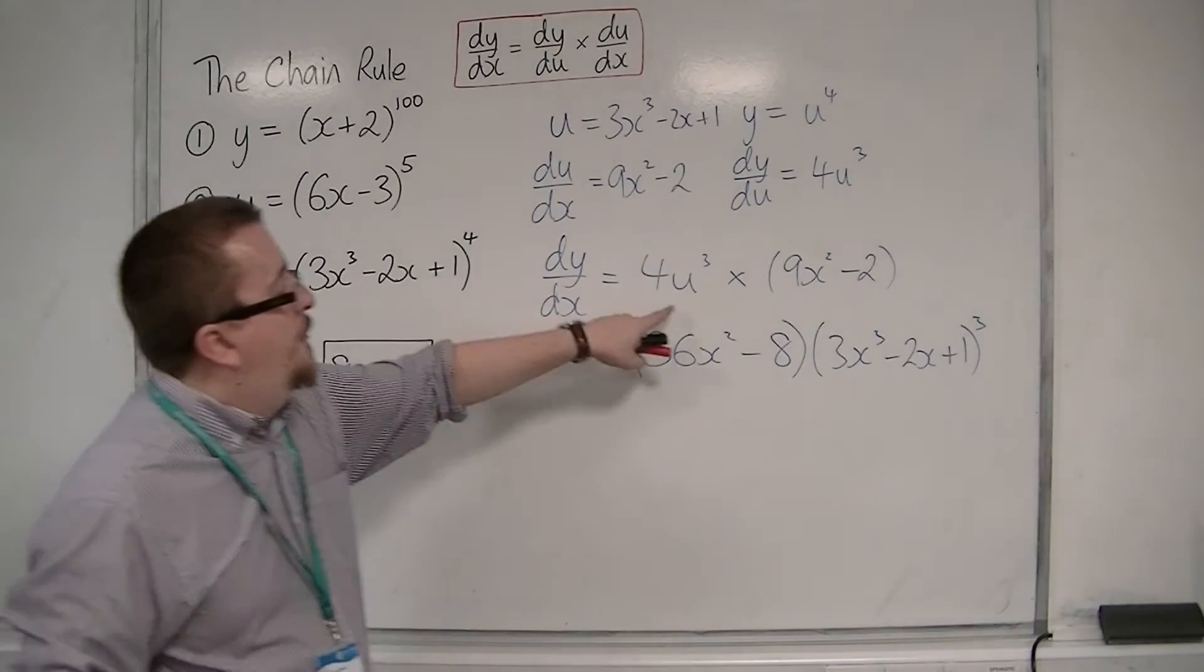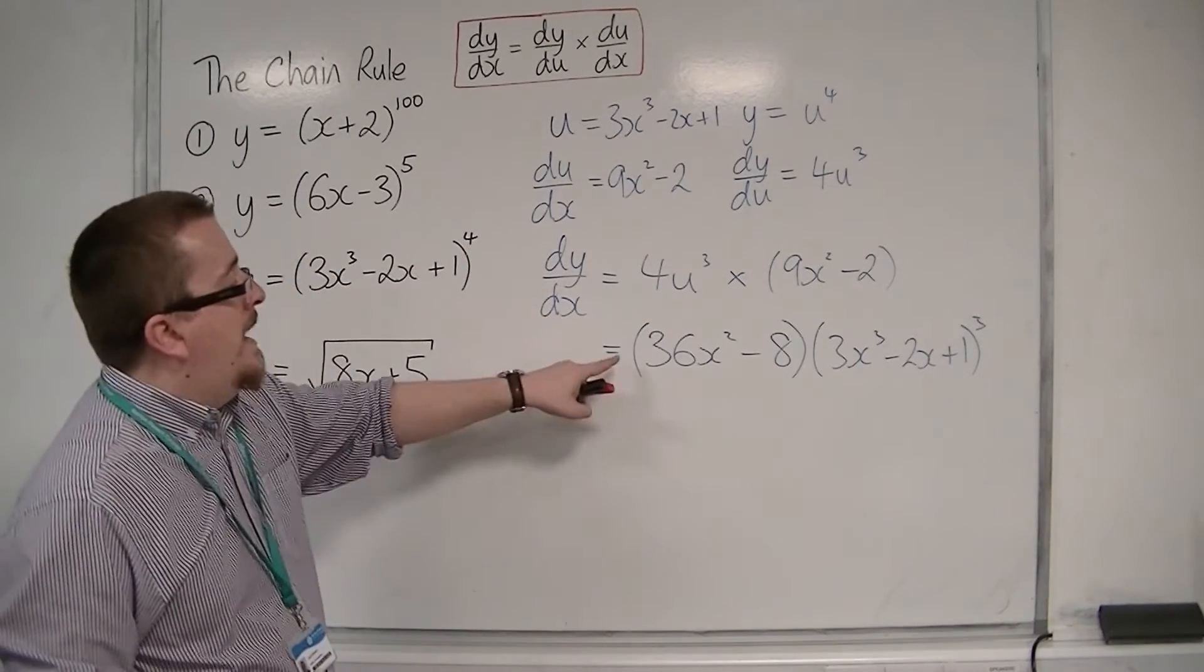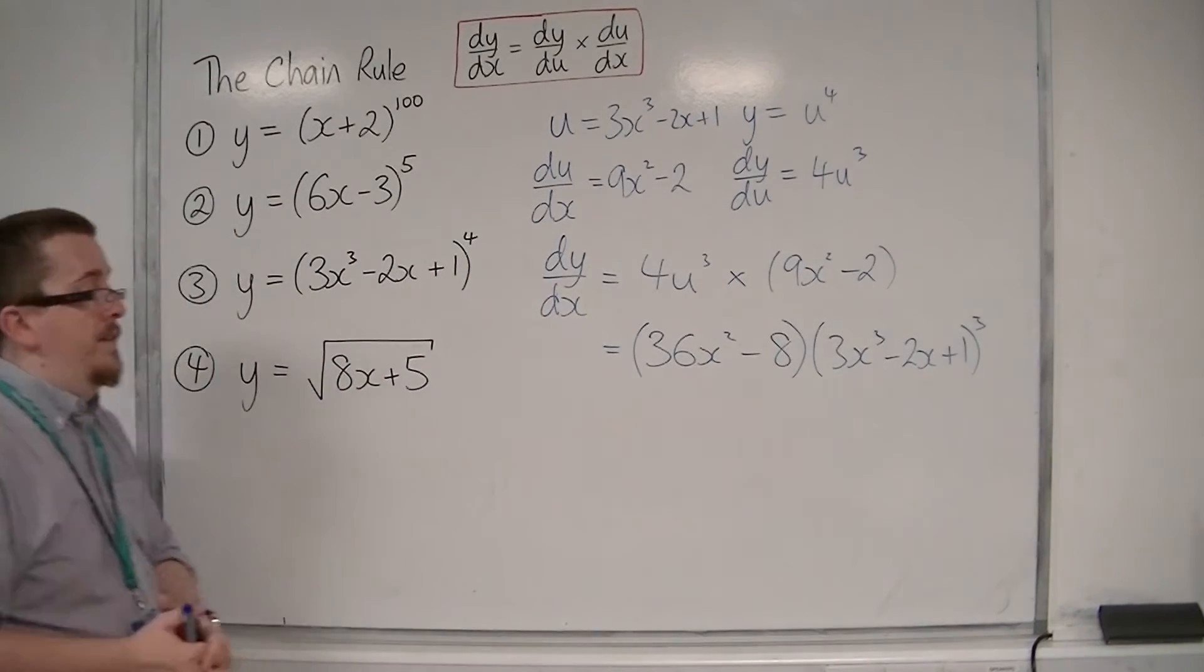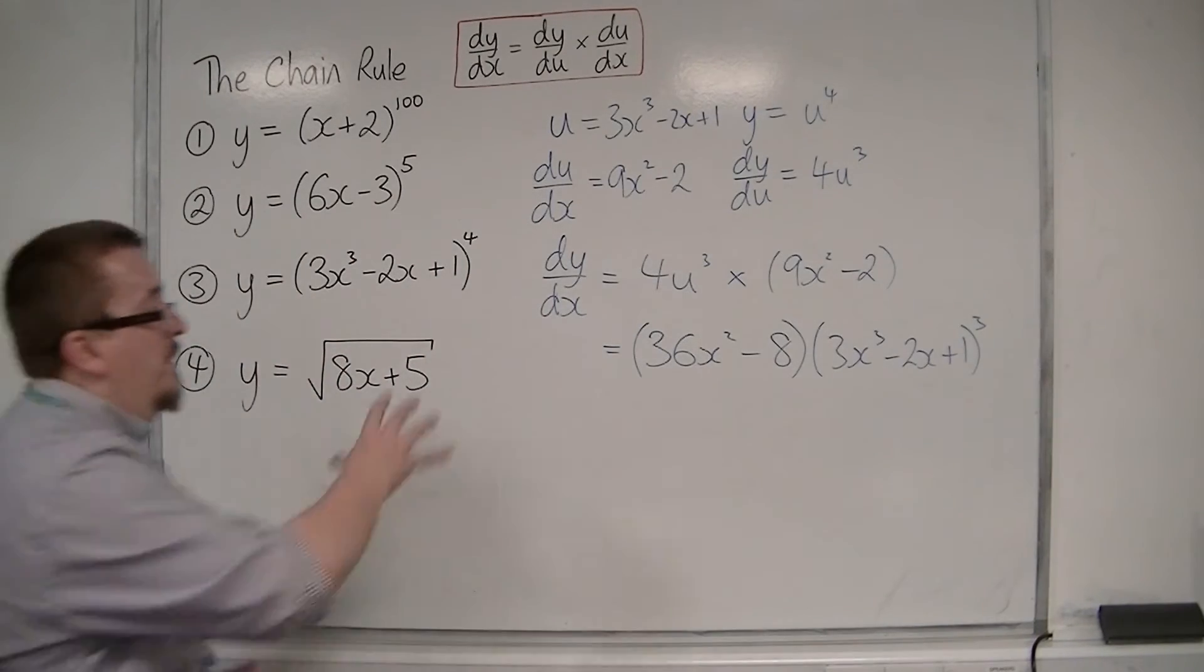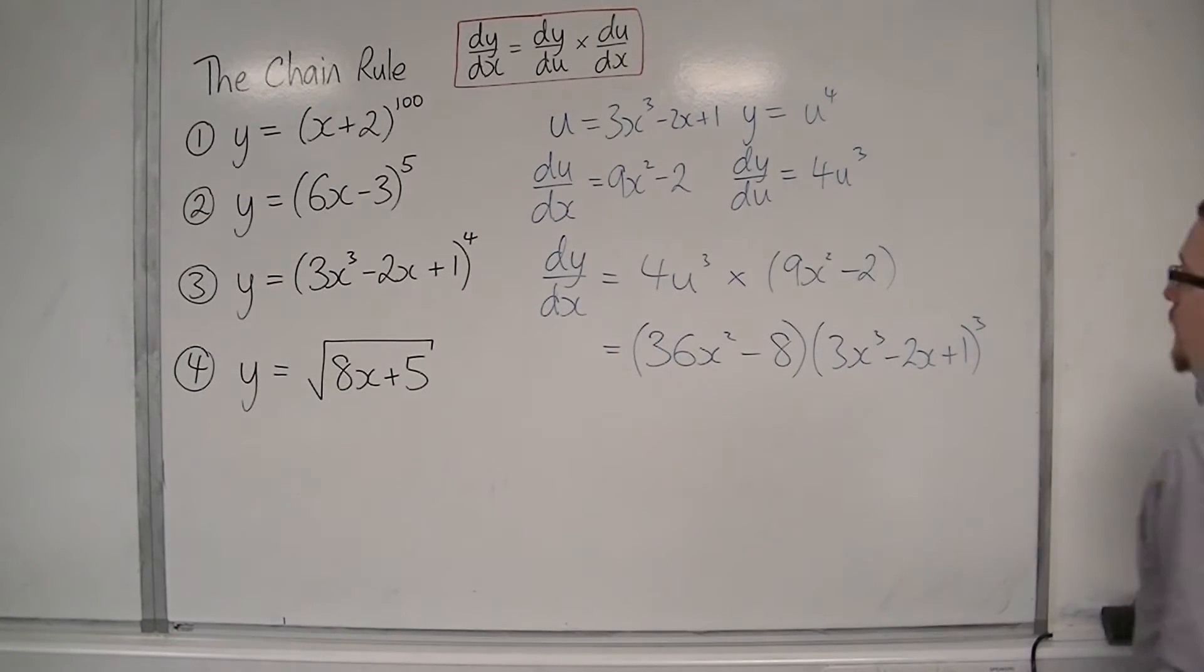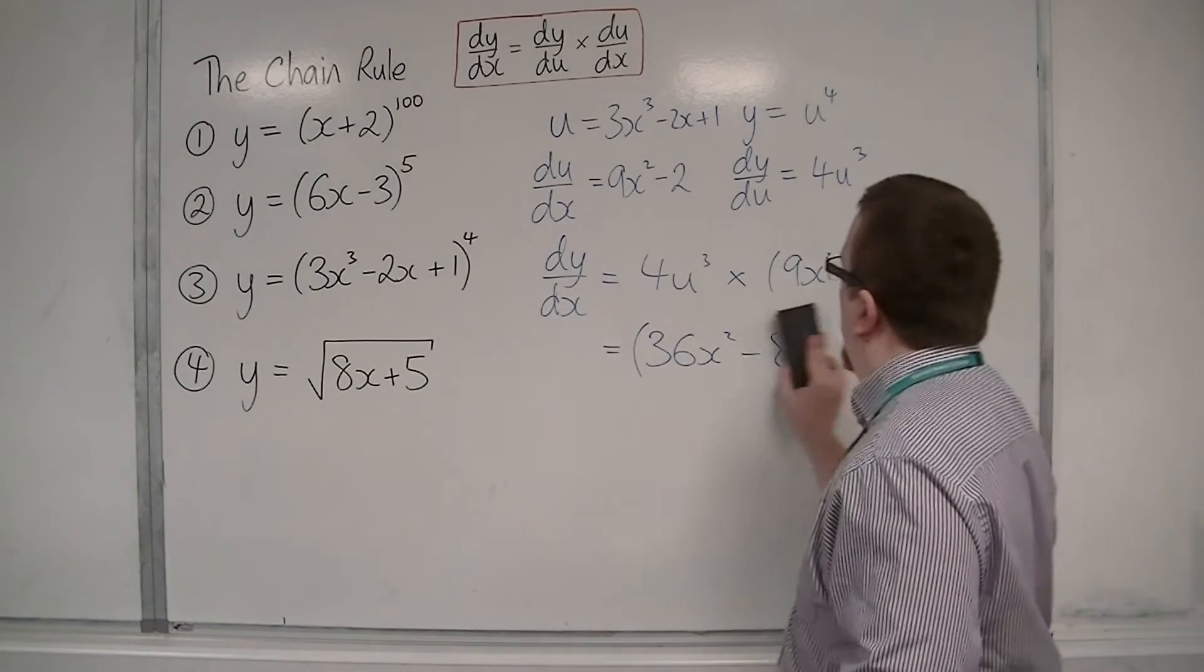Now I didn't have to bring that 4 inside there. I could have had 4 lots of (9x squared minus 2) times that. That's perfectly fine. So that is what you should get. Let's now have a look at the last one, number 4.